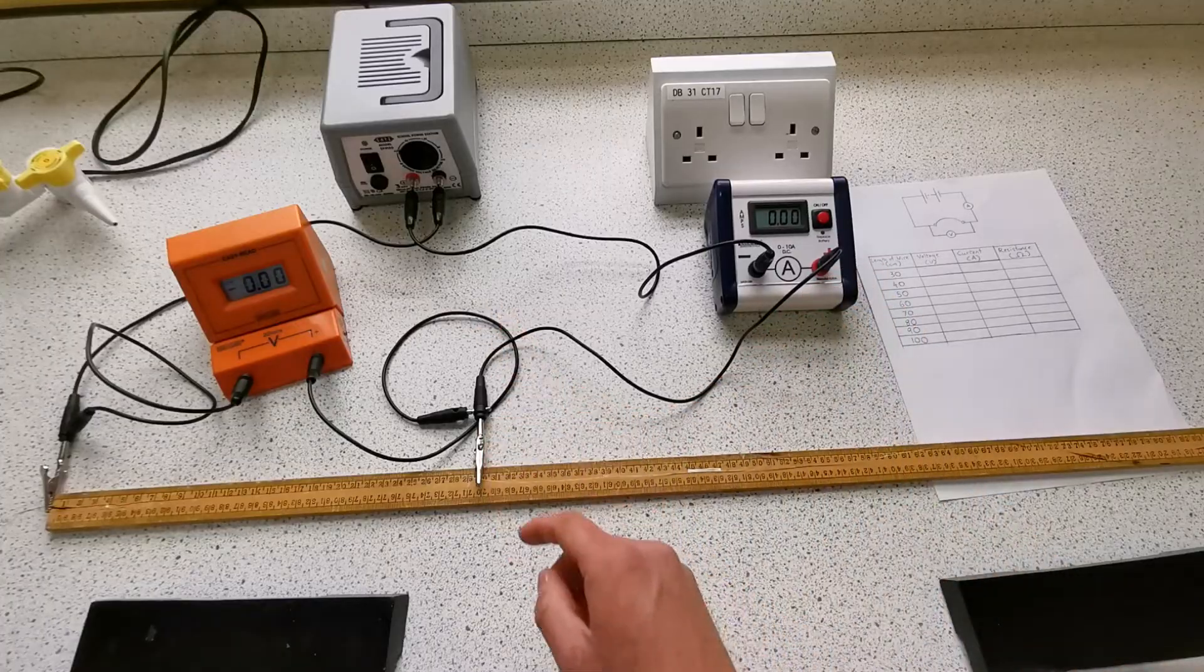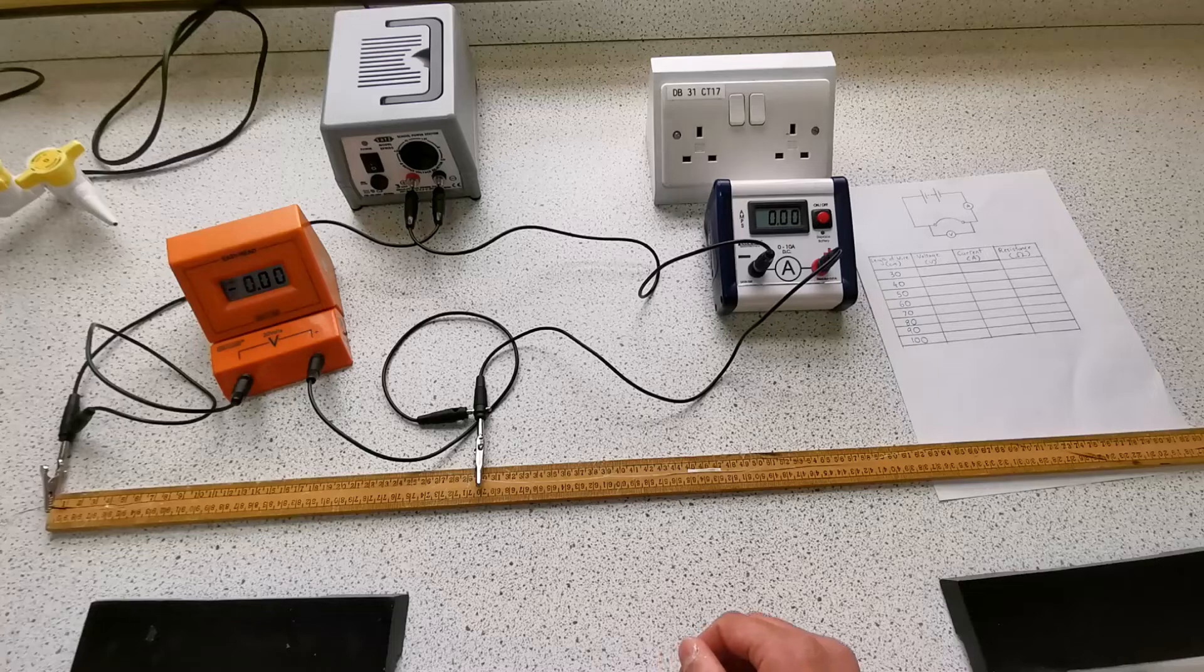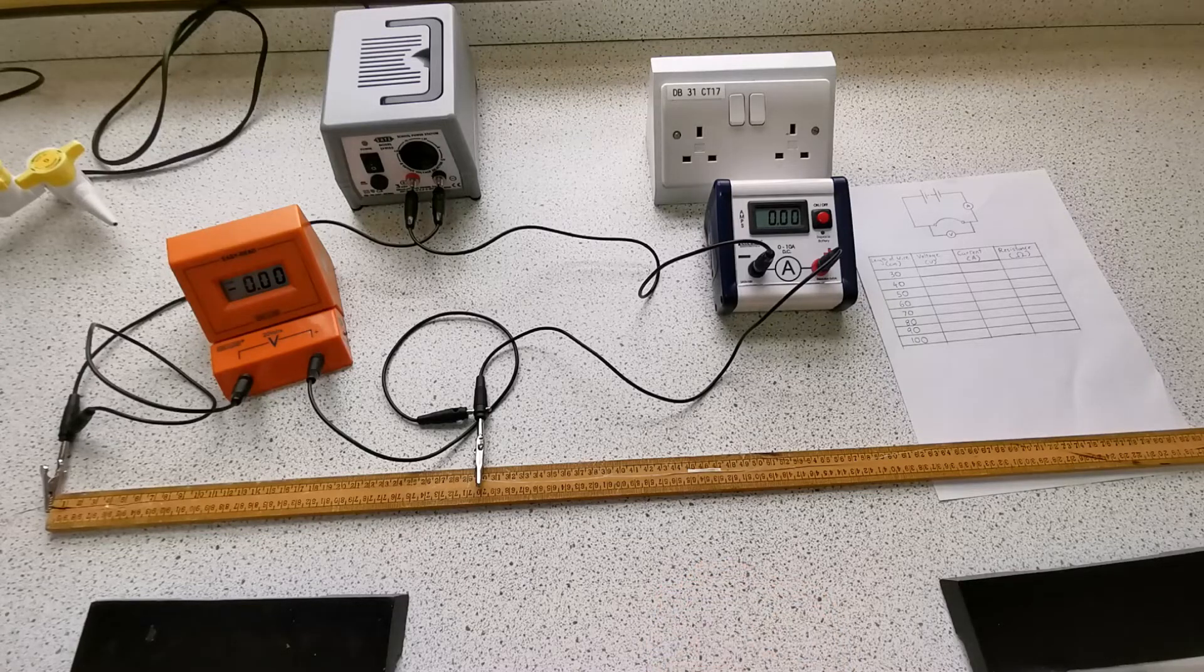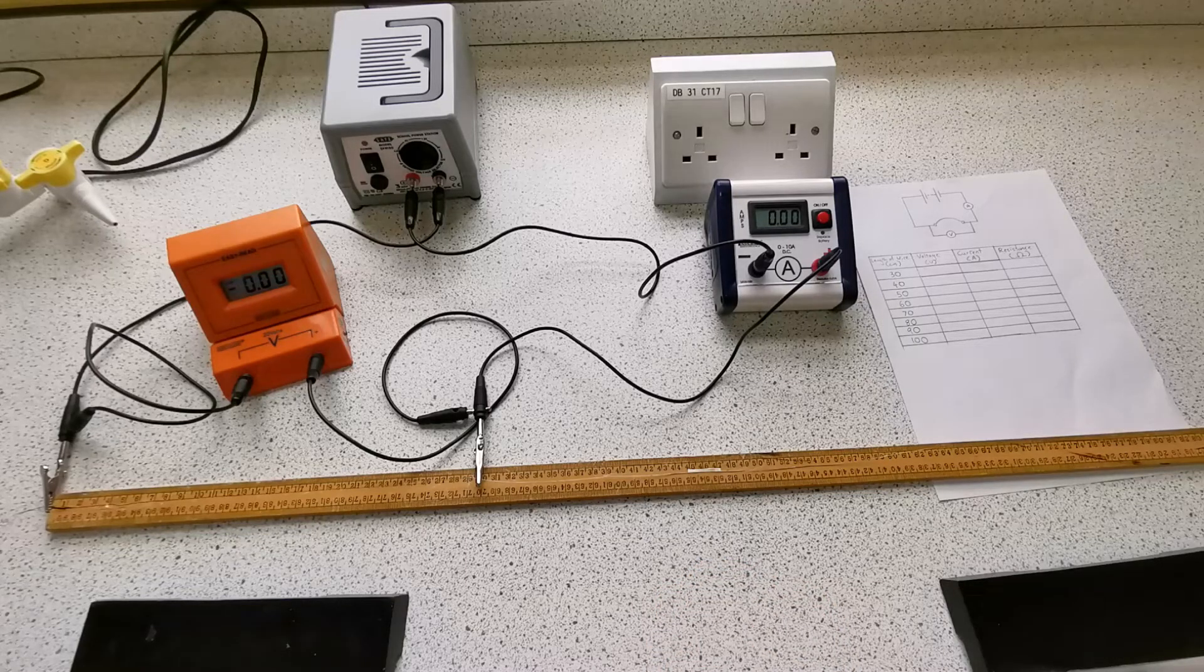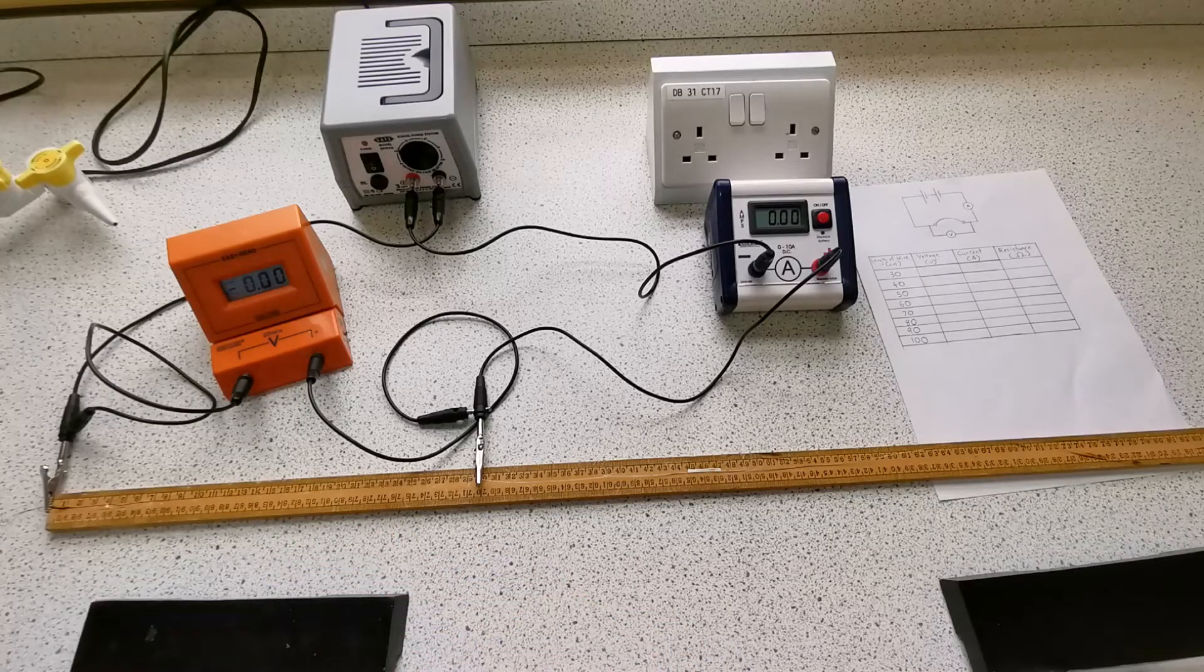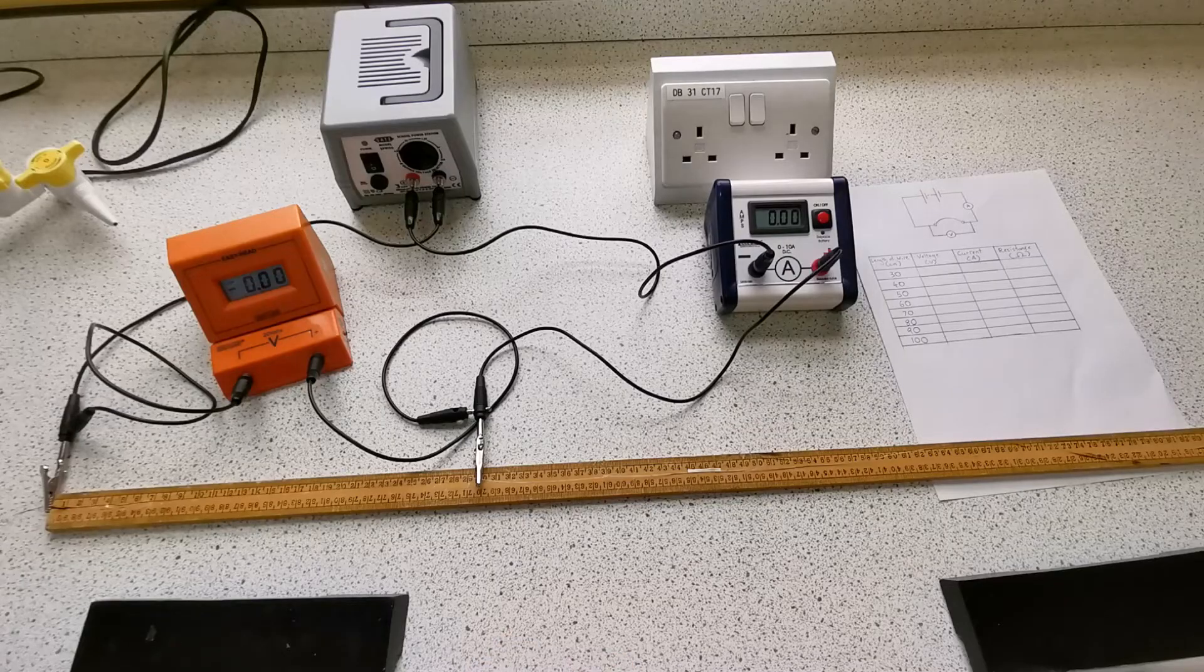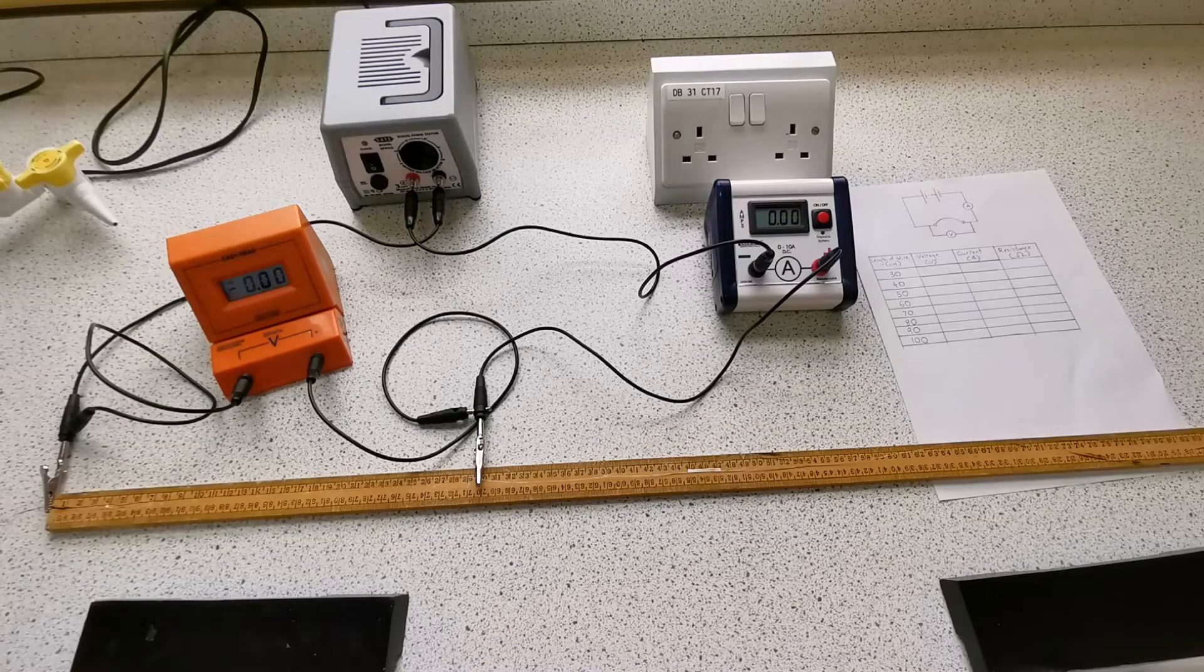So I'm going to turn on the circuit and write down the voltage and current in my table. I'm only going to leave the circuit on for a short period of time because the longer it's on, the higher the temperature of the wire will go, and temperature will affect the resistance. So to make my results more accurate, I'm only going to turn on the circuit for short periods of time.